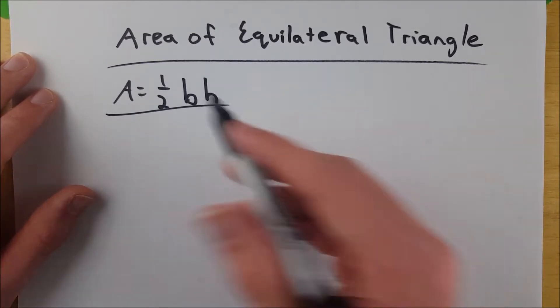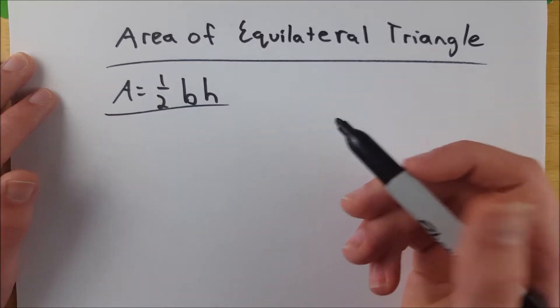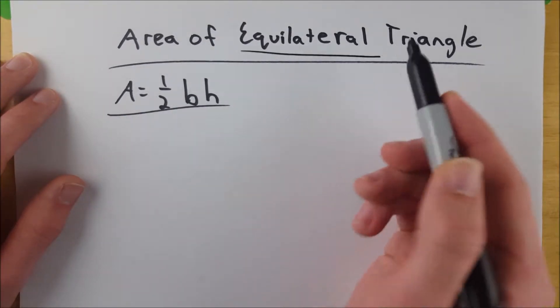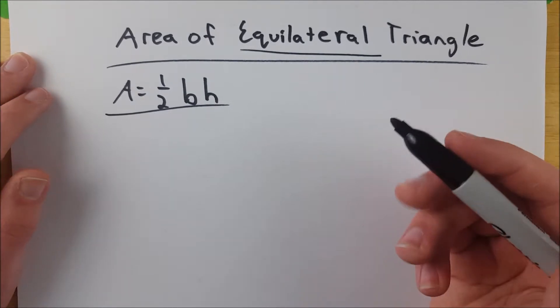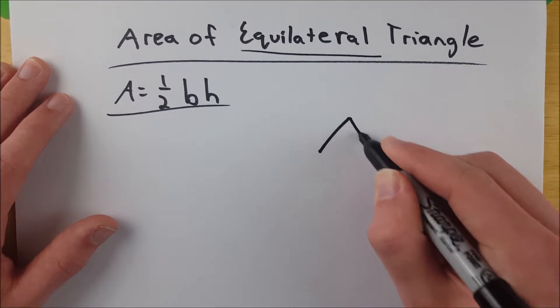The only problem is it takes a little time because you've got to use the Pythagorean theorem to find the height. But with an equilateral triangle, because of the relationship of the sides - they're all equal - we might have something like this.